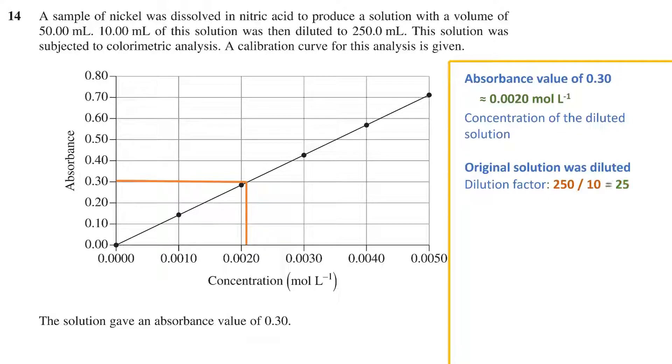which gives us a dilution factor of 25. Therefore, the original concentration is just 0.002 multiplied by 25, giving us 0.05 moles per liter.